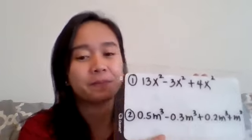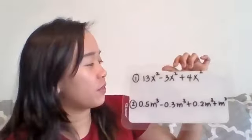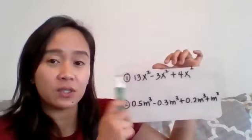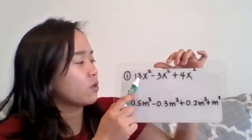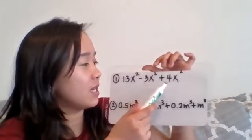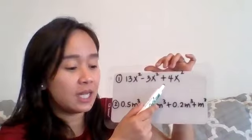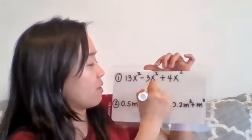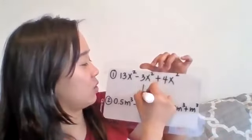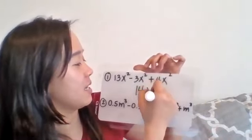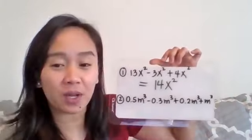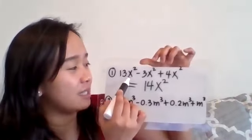So let's do the math. You can combine everything, just deal with the numbers or the coefficients before the variables. So 13 minus 3 is 10, then 10 plus 4 is 14. That means for the first one that should be 14x². So again, since they are like terms you can combine them right away.